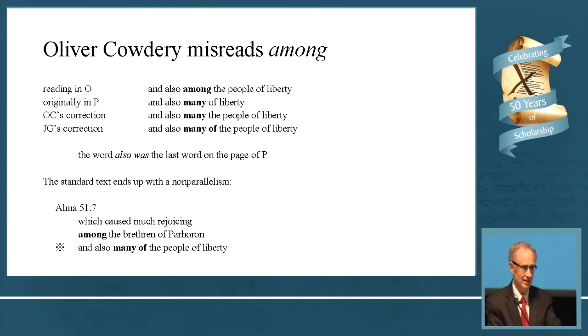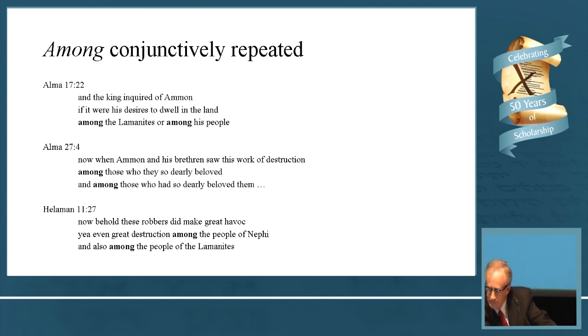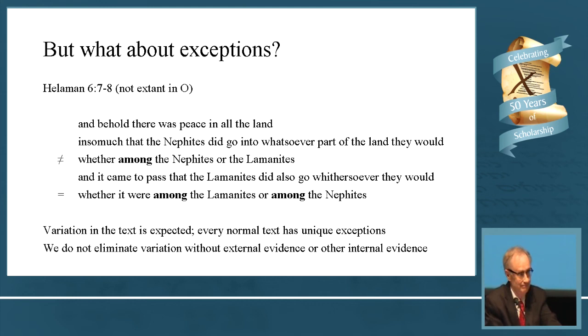The conjunctive repetition of among, we see it. But I want to show you, what about exceptions? What if I find a place where one of the amongs is missing? And behold there was peace in all the land insomuch that the Nephites did go into whatsoever part of the land they would whether among the Nephites or the Lamanites. No among, no repeated among. And it came to pass that the Lamanites did also go whithersoever they would whether it were among the Lamanites or among the Nephites. The temptation here is to say aha I'm going to put among in the first one because I see it everywhere. But there are other places where among isn't repeated so you don't do it.